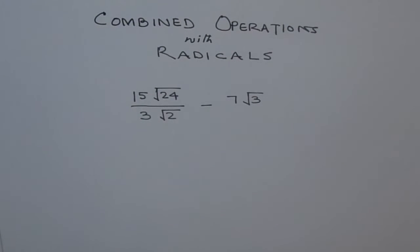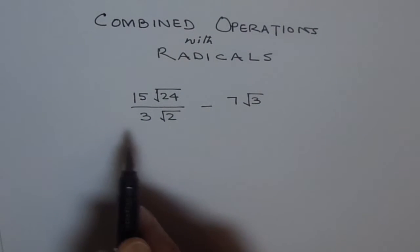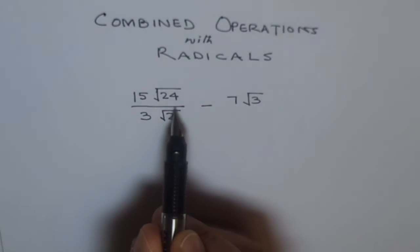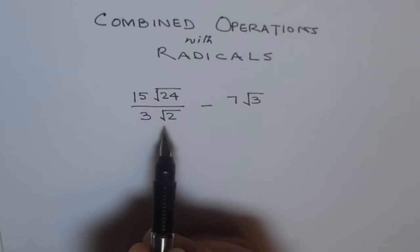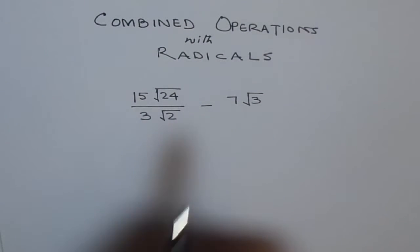Hello, now let's see how to do combined operations with radicals. Here we have a problem. So it is 15 times radical 24 divided by 3 times radical 2 take away 7 times radical 3.